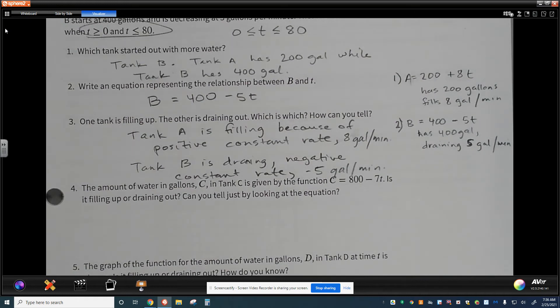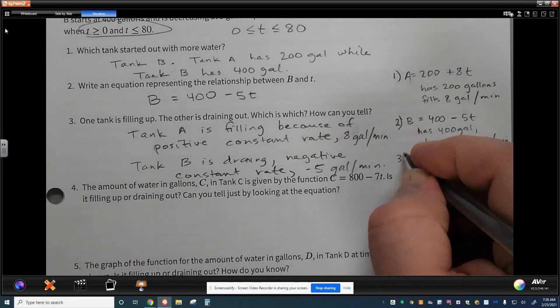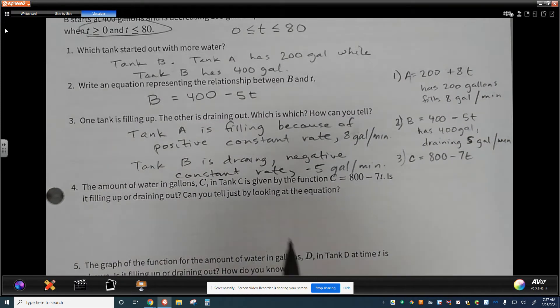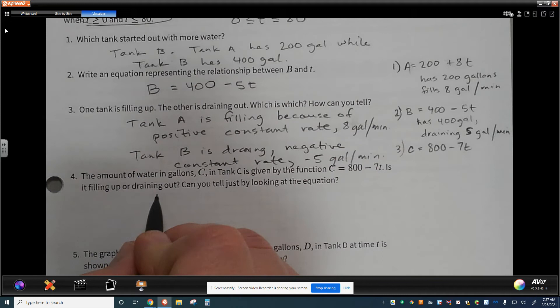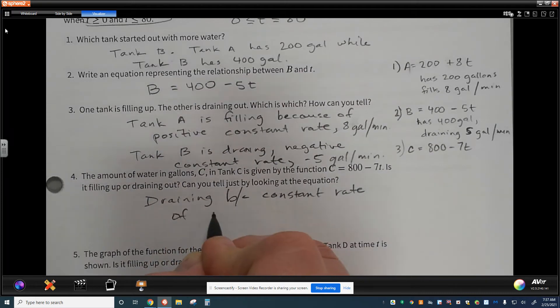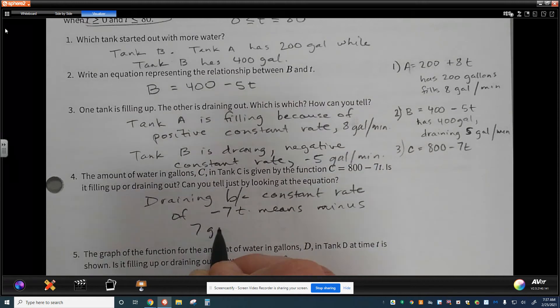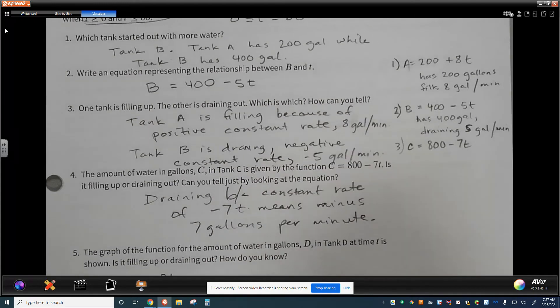Okay. Here's our third tank. The amount of water in gallons, C, in tank C, is given by the function. So here's our third tank. C is equal to 800 minus 7T. Is it filling or draining out? Can you tell this just by looking at the equation? I certainly can tell that it is draining. And it's because of the constant rate. Draining because constant rate of minus 7T means minus 7 gallons per minute. All right. Hope that makes sense there.